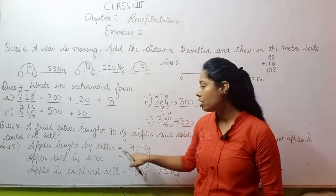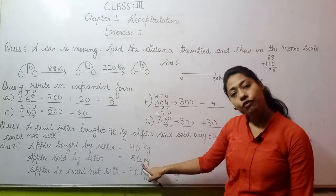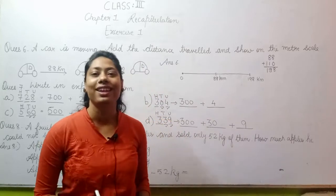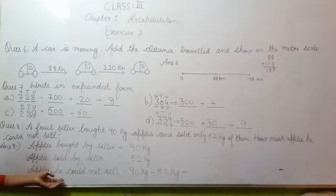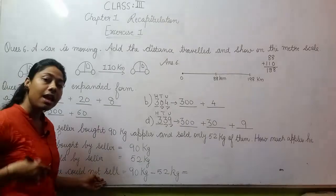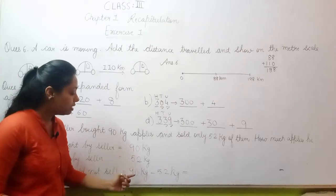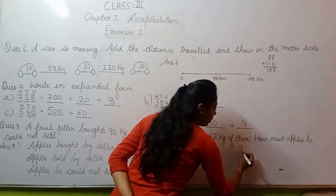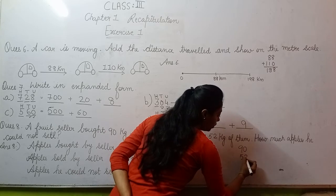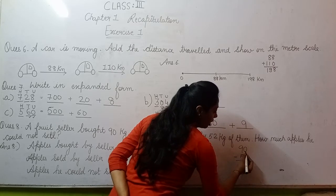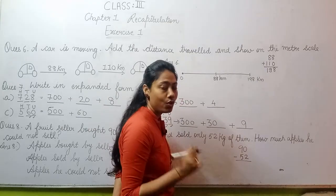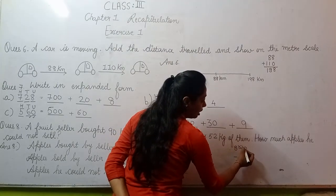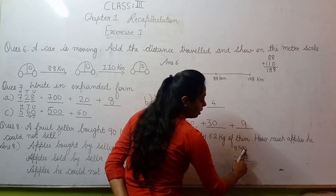The question asked how many apples could they not sell. So here what will you find - apples they could not sell. So 90 kgs minus 52 kgs. Let's do it once. From 90 kgs you have to subtract 52 kgs. You can't subtract 2 from 0, so when we can't subtract, what will we do?